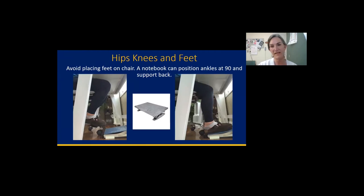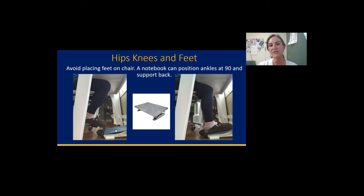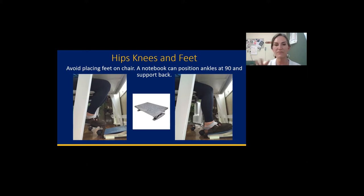For hips, knees, and feet, the best position for your low back is to avoid putting your feet on the chair rungs. If your chair is too high, a good hack is just using a notebook angled so your ankles are at 90 degrees and knees at 90 degrees. Or you could buy a fancy footrest, but it's really not necessary. If your notebook slides around, use non-slip shelf liner underneath.